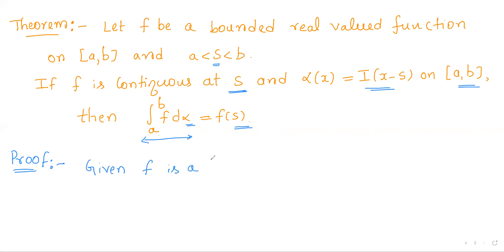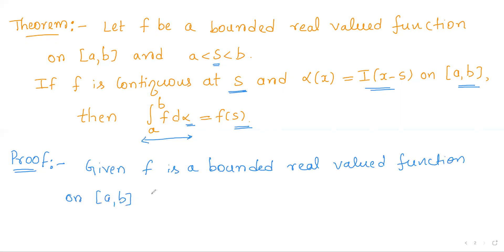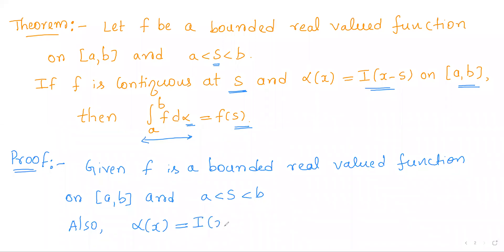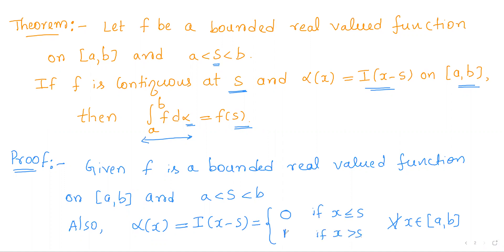Given: f is a bounded real-valued function on the closed interval [a, b], and s is any point in between a and b. Also, α is the unit step function i(x − s), so for every x in [a, b], α(x) = i(x − s). For all x in this interval with x less than s, i(x − s) = 0.